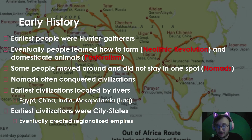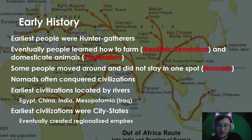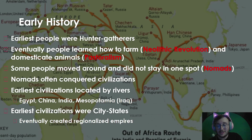These same people are going to domesticate animals — that's known as pastoralism, the domestication of animals and livestock. Some people are not going to settle down and are known as nomads — people who constantly move from one location to another. Nomads will often conquer civilizations and be found around trade routes. They're also going to help spread new ideas, technology, economic goods, and sometimes diseases. For the most part, nomads are agents of change.